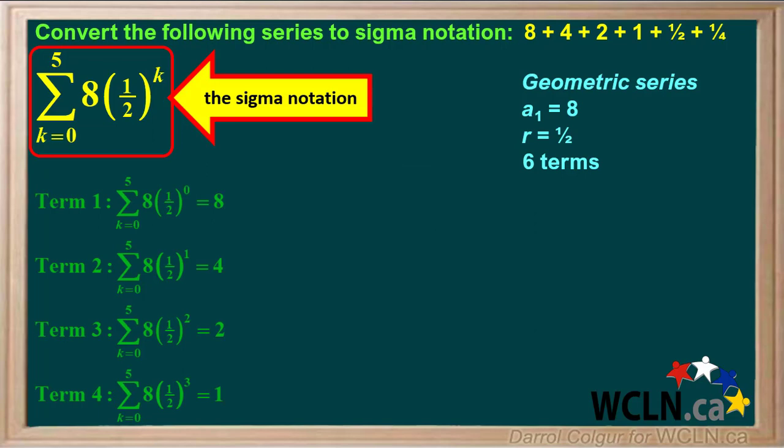So this is a correct sigma notation for this series. Be aware that other variations of this may also be correct. As long as inserting the possible values of the variable result in the given terms, the sigma notation is correct.